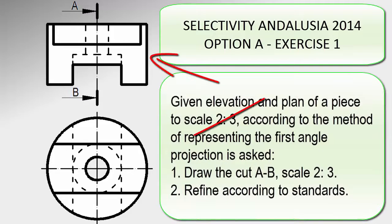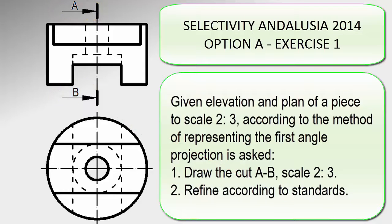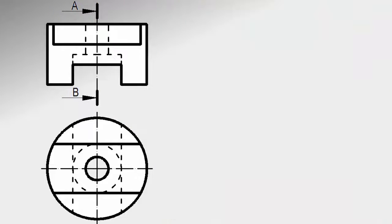We get the elevation and plan of a piece requesting us to perform the cut specified AB. Now cutting and other video explain the assessment. Looking at the direction of the arrows that indicate the cut, we see they go to the right, so we must draw the left profile with the cut specified.